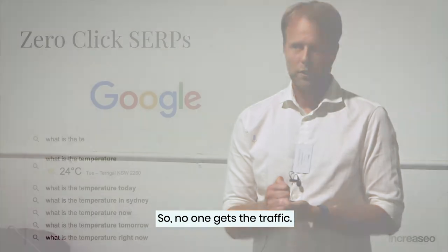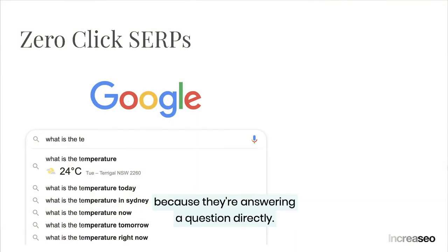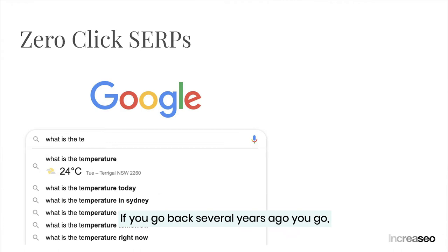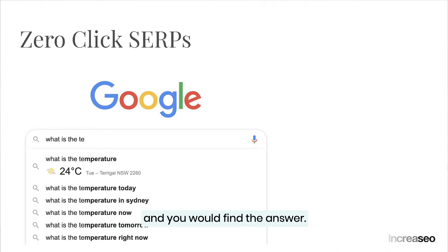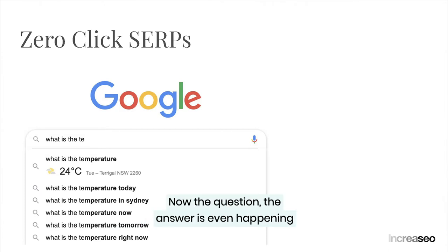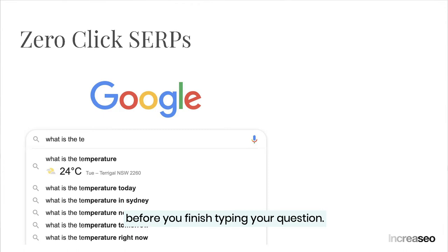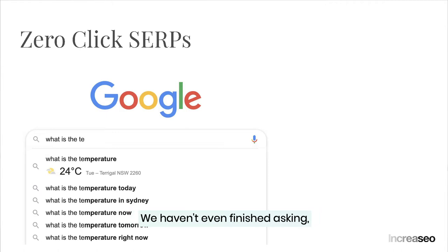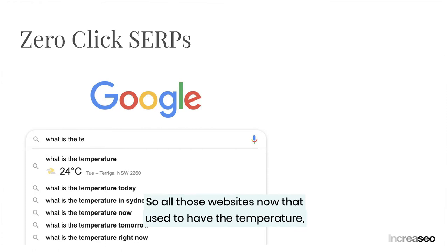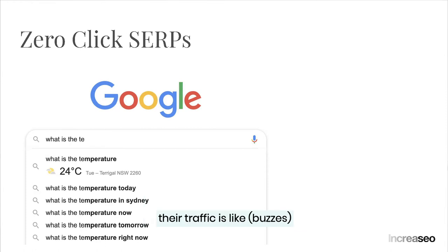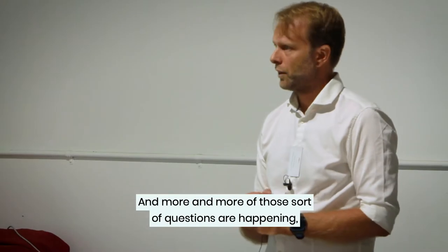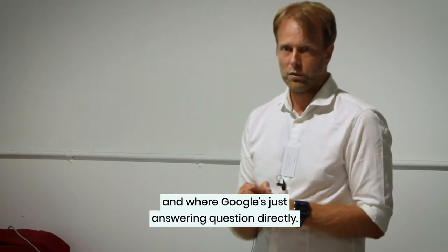No one gets the traffic — Google keeps it because they're answering the question directly. If you go back several years and asked 'what's the temperature today,' you'd click through to a website to find the answer. Now the answer appears before you even finish typing. So all those websites that used to have the temperature — their traffic is declining, and more and more of those questions are being answered directly by Google.